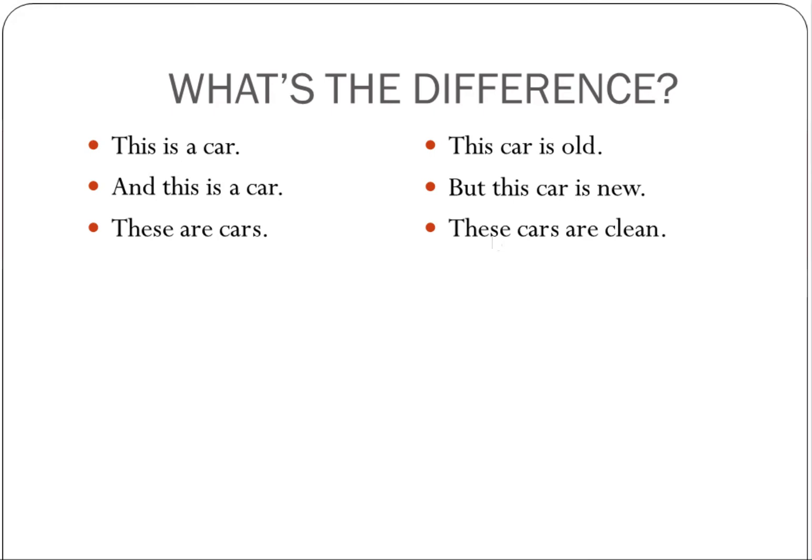I put some sentences in English and I was wondering if you could see the differences between these sentences. On the left hand side we have This is a car and this is a car. These are cars. And on the right hand side we have This car is old. But this car is new. These cars are clean.